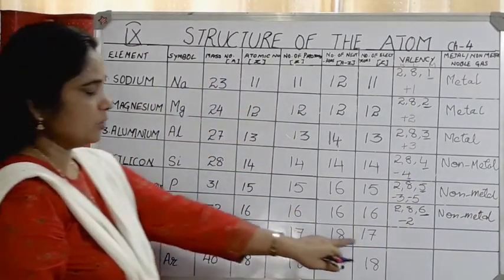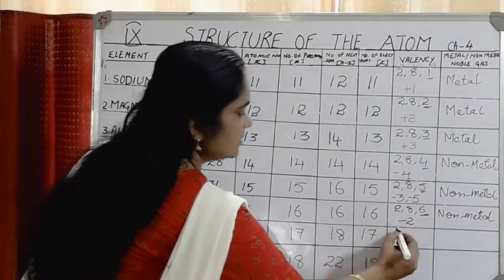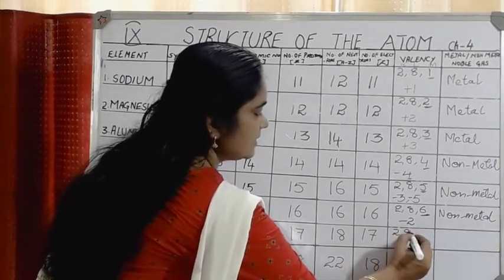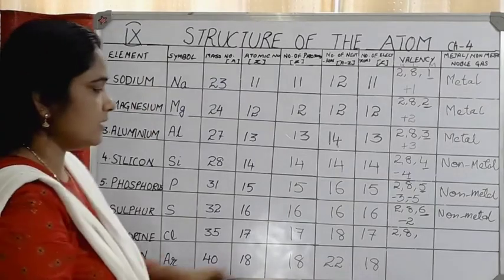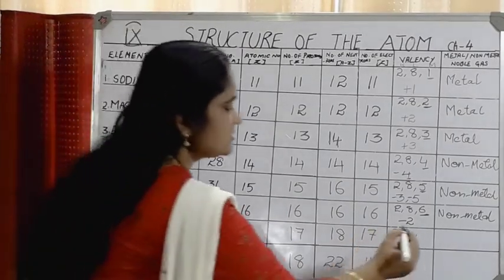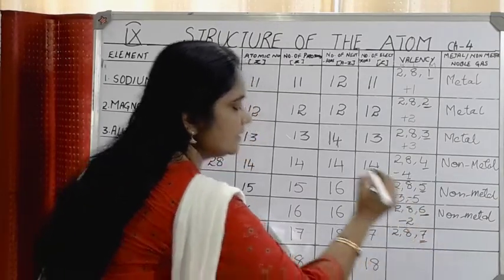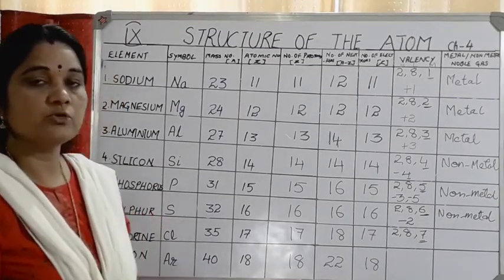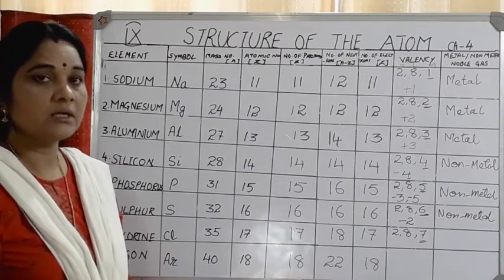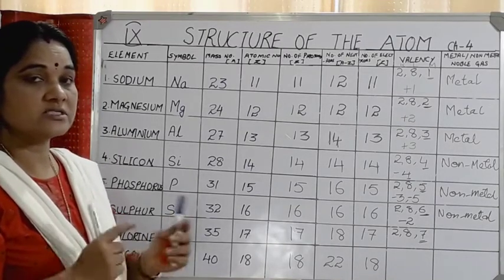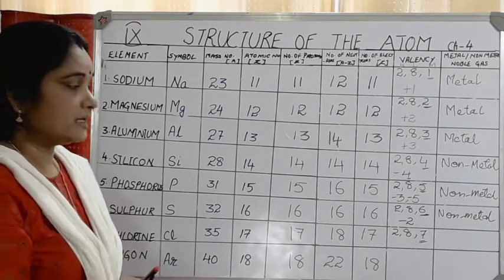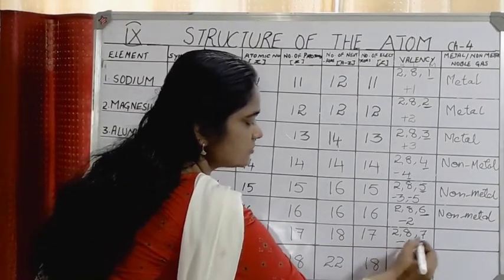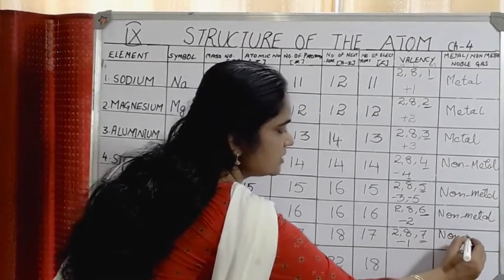Chlorine has 17 electrons, with electronic configuration 2, 8, 7. The outermost shell has 7 electrons — just 1 less than 8. During bond formation, chlorine gains 1 electron to complete the octet. Valency = 8 minus 7 = 1, written as −1. Since it gains electrons, chlorine is a non-metal.